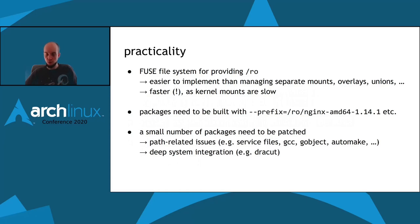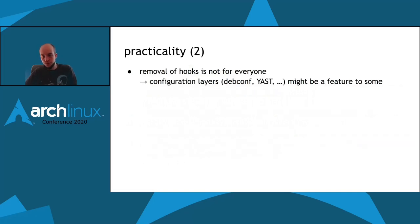For example, some systemd service files come with fully qualified hard-coded paths such as /usr/bin/nginx that need to be patched to use the fully qualified location within the /ro mount point instead. This affects a few packages such as gcc, gobject, automake, etc., but not too many overall. The other class of packages needing patches are those with deep system integration such as dracut for building your init RAM filesystem. I'll note for completeness that the removal of hooks might not be for everyone — some users appreciate configuration layers such as debconf, YaST, etc., that some distributions provide.